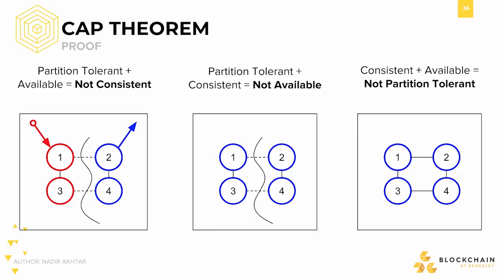Let's try another configuration: partition tolerance and consistency. We'll see how that ends up sacrificing availability. Same scenario — I send the update to Node 1, which then sends the update to all the other nodes. Nodes 2 and 4 are still ignorant of the update to red. Again, I query Node 2. Since Node 2 is bound to consistency, it chooses not to return anything. The bad news is we get no information, but the good news is we get no outdated information. We can say that Node 2 first asks all other nodes for updates before returning a state. If it cannot receive messages from all nodes, it will assume it has outdated information and refuse to return a value.